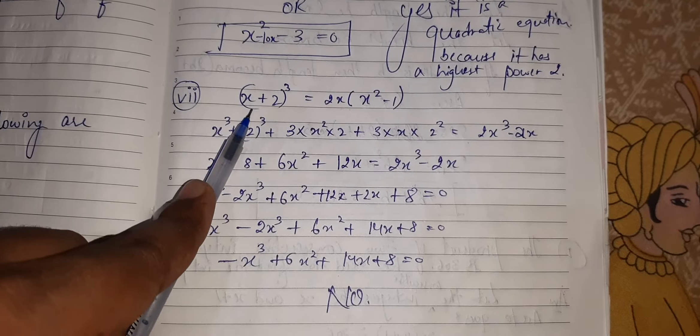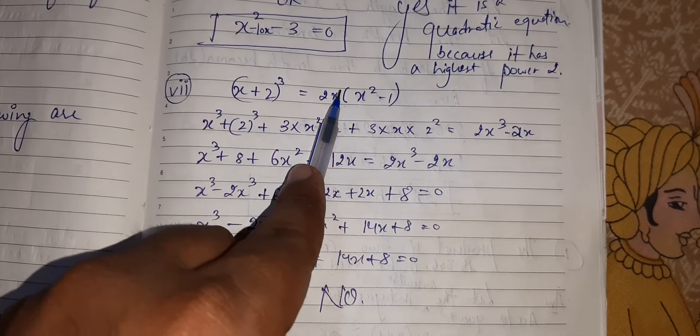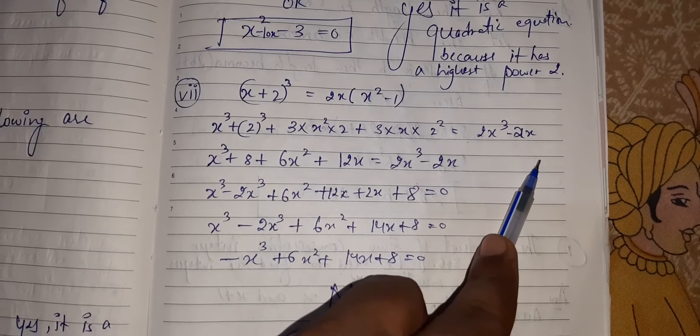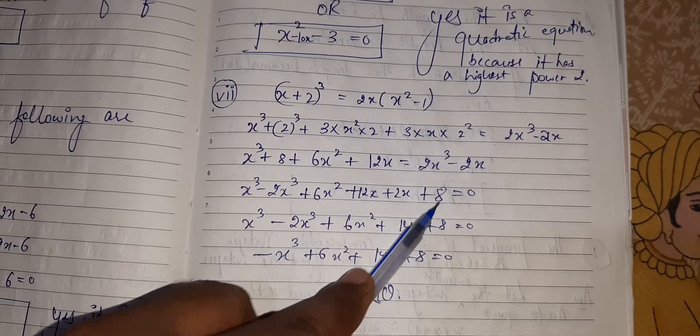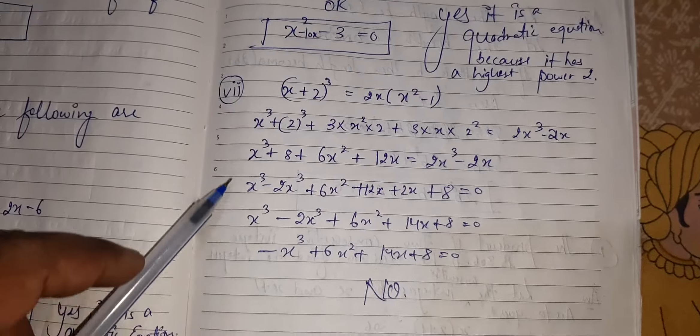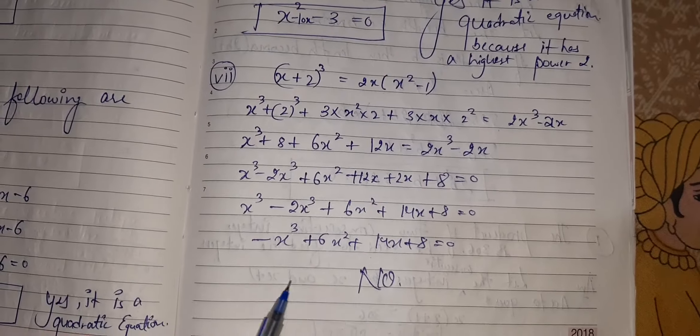Again, I have applied A plus B whole cube here. Multiply 2X cubed minus 2X. Bring this minus 2 plus 2X cubed this side and minus 2X this side. By solving it, we have got this equation.